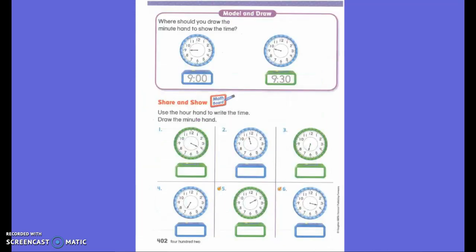I want you to turn your paper over. Let's read the directions. Where should you draw the minute hand to show the time? First of all, we can tell what time it is just by looking at the hour hand. And what time does this first clock show? 9 o'clock. So let's write 9 o'clock down here. Do I have to have my colons? Yes. Do I have to have both zeroes? Yes. We don't want 900. We want 9 o'clock. Right? So first grade, because my hour hand is pointing right to the 9, my minute hand is going to point where?